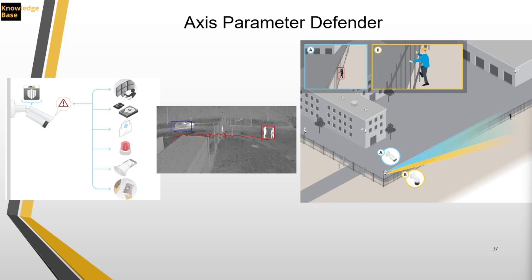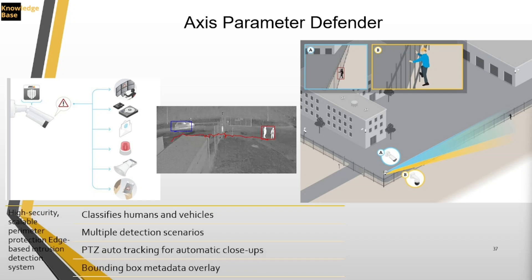One application I want to talk about is Access Perimeter Defender, an application for perimeter surveillance and protection — ideal for high-security perimeter protection where there is a need to strengthen physical access control with reliable intrusion detection. It detects and verifies potential intrusions at the perimeter. It mainly runs with thermal cameras that can cover longer distances. A thermal camera is placed over the fence, looking over it, classifying humans and vehicles. We can define multiple detection scenarios based on different zones.